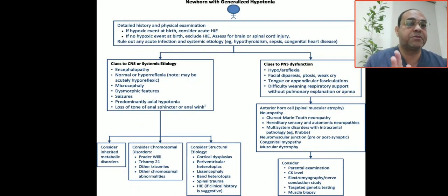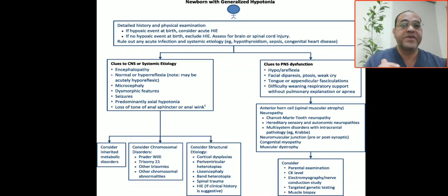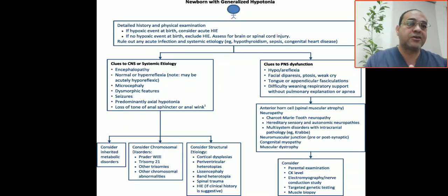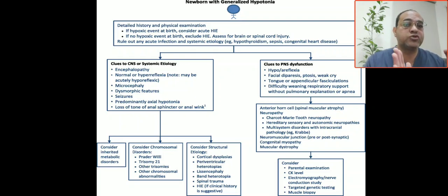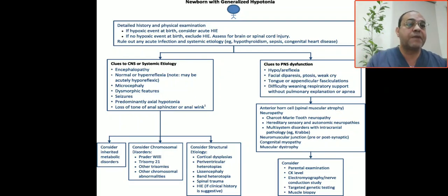The approach to a hypotonic baby: take detailed history and perform physical examination. If there is evidence of hypoxia during the perinatal period, this indicates acute hypoxic-ischemic encephalopathy — an upper motor neuron cause. If no hypoxic event, exclude other causes. Rule out brain lesions, spinal cord injuries, acute infection, systemic etiologies such as hypothyroidism, sepsis, and congenital heart disease.